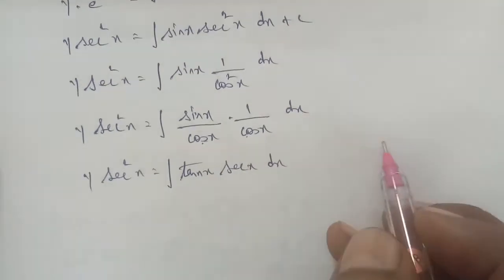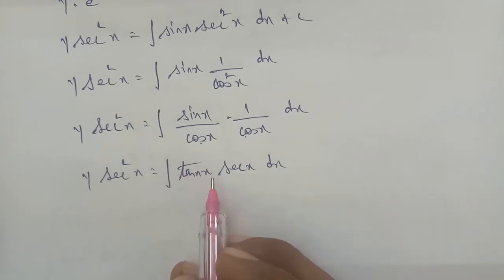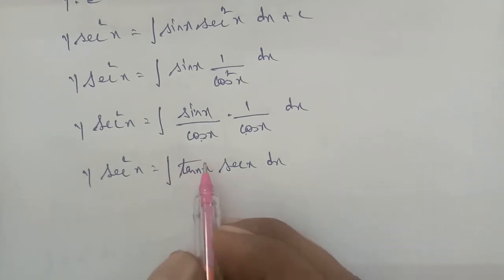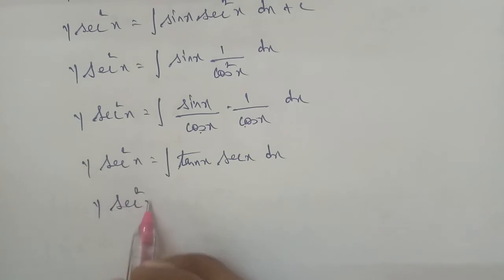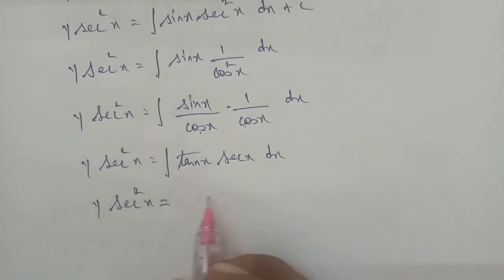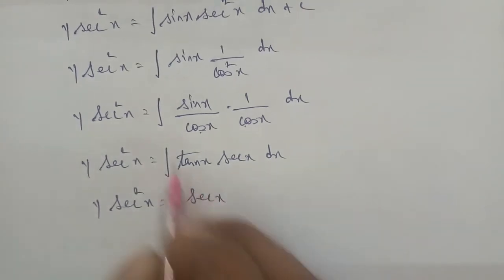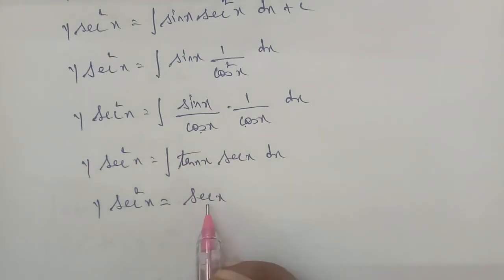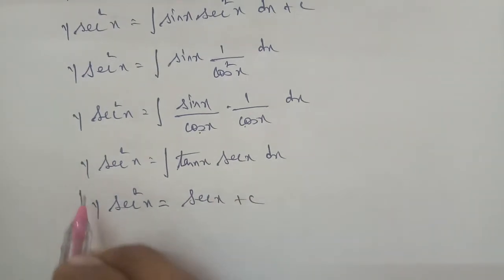Here is the direct formula: integral of tan x · sec x dx equals sec x. Therefore, y·sec²x equals sec x plus c. So this is the general answer, but the question gives us initial conditions.